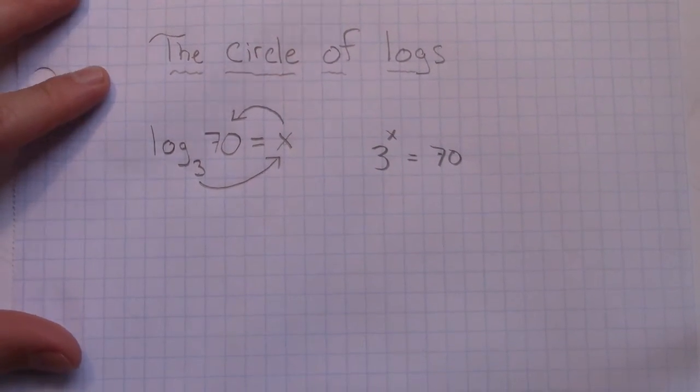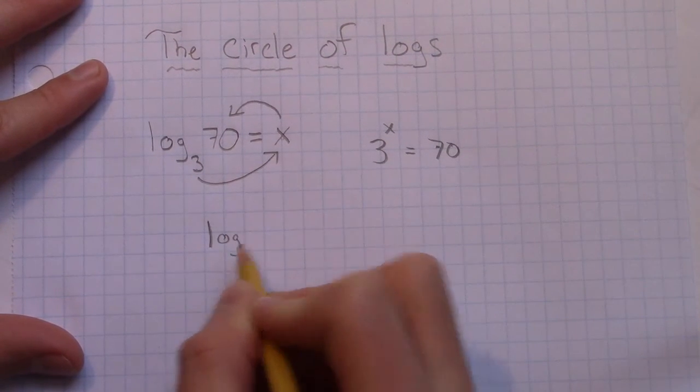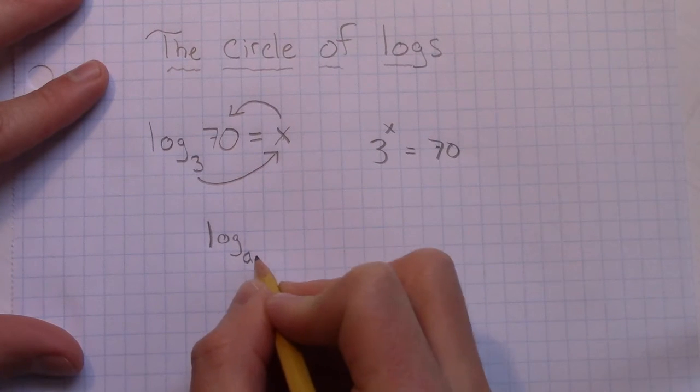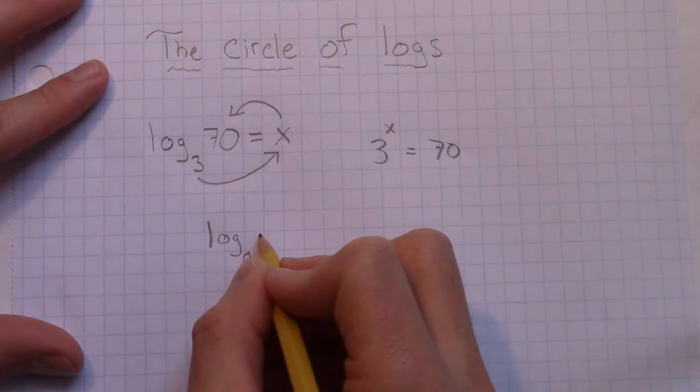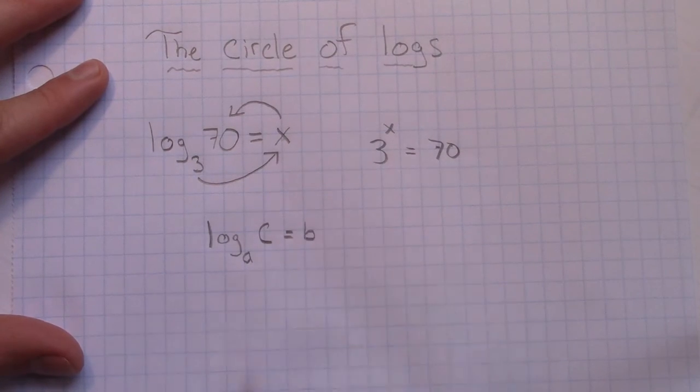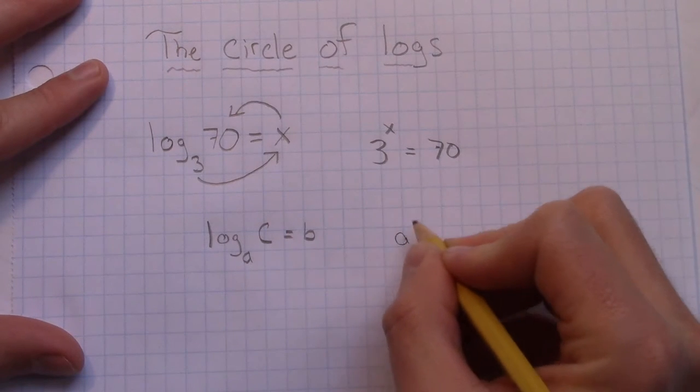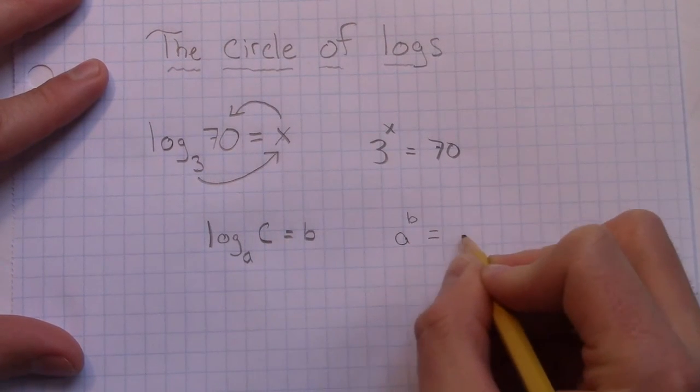So in a textbook, you'll probably see something like this. You'll see log base a of c, let's say, equals b. And it'll have some other statement. This is true if and only if a to the power of b equals c.